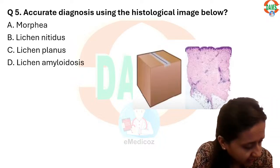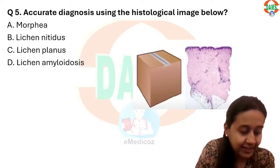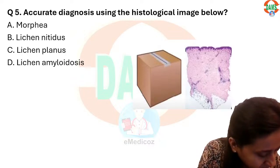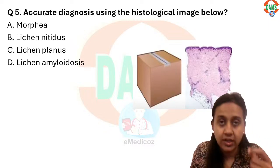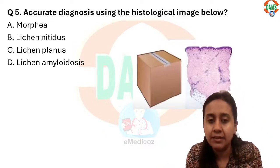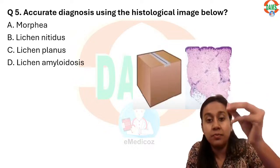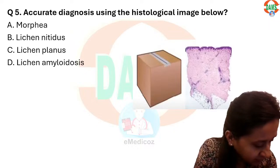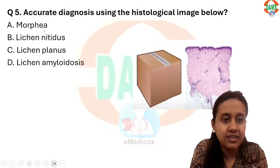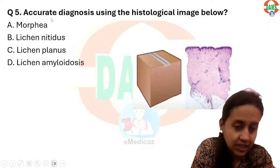A student says the options for the labeling question were: arrector pili muscle, sebaceous gland, eccrine gland, and apocrine sweat glands. The answer should remain sebaceous gland — it is very characteristic in that image. For the Morphea question, the correct answer is option number one — Morphea — because of the box-shaped biopsy pattern.